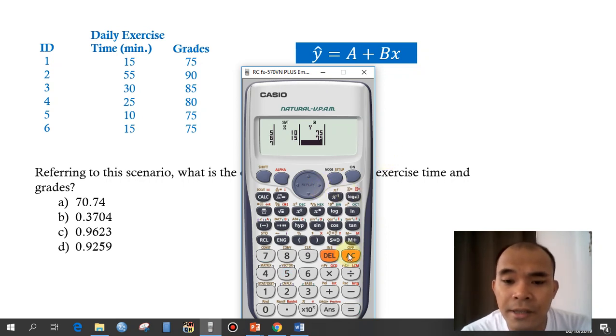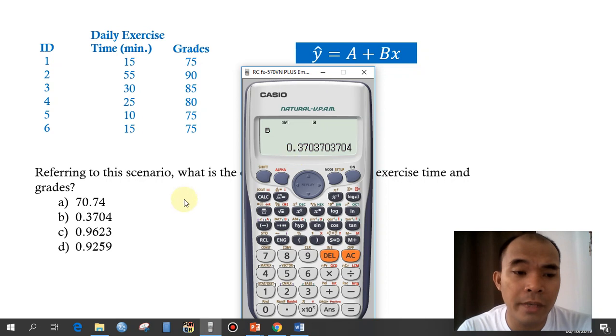Okay, and then just press AC here, and then our goal is to solve for our b, so simply shift, start, go to the regression, 5, and then just click on our b here, so 2, and then just press equals. So in a very short amount of time, we already computed our b.